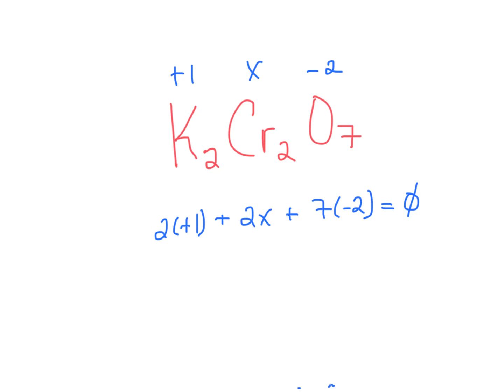And again, that's going to be equal to 0 because this is a neutral compound. So we have 2 plus 2x minus 14 equals 0. 2x minus 12 equals 0. 2x equals 12, and x equals plus 6. So the oxidation number of chromium is going to be plus 6.